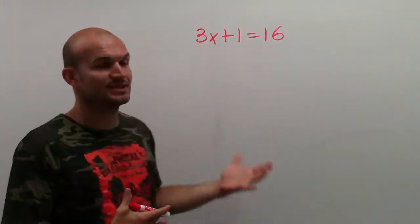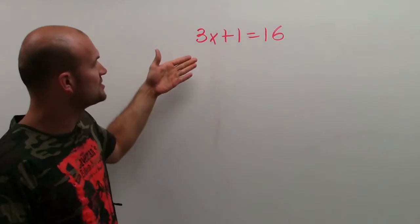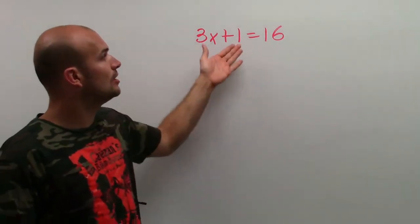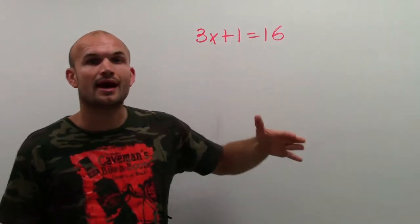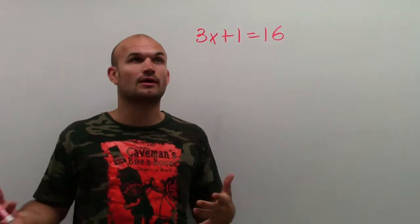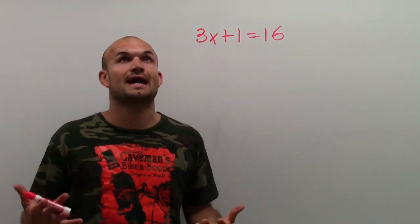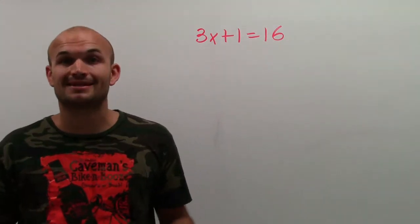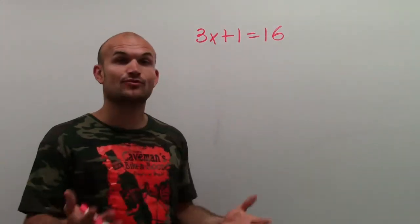So real quick, just to kind of start off here, this problem says 3 times the number plus 1 equals 16. Now, for many of you, we might be able to think what can I multiply by 3, add 1 to it, and I get to 16, and you can already think of the answer in your head. And that's great.